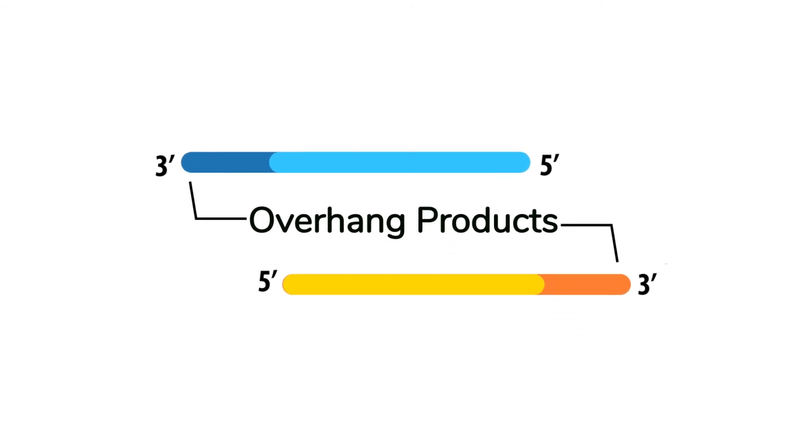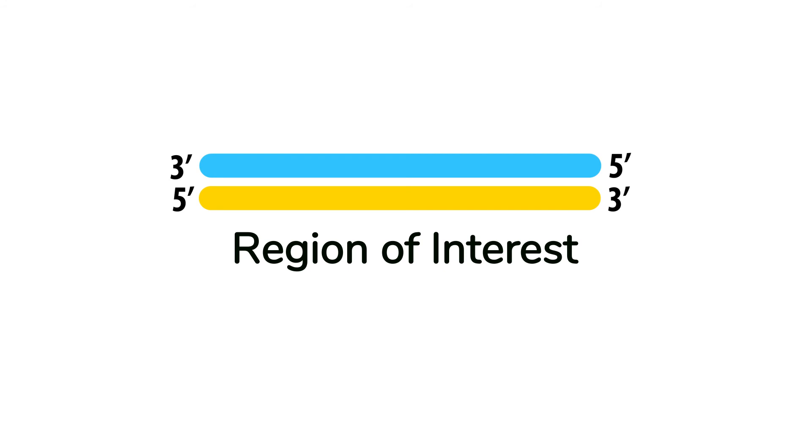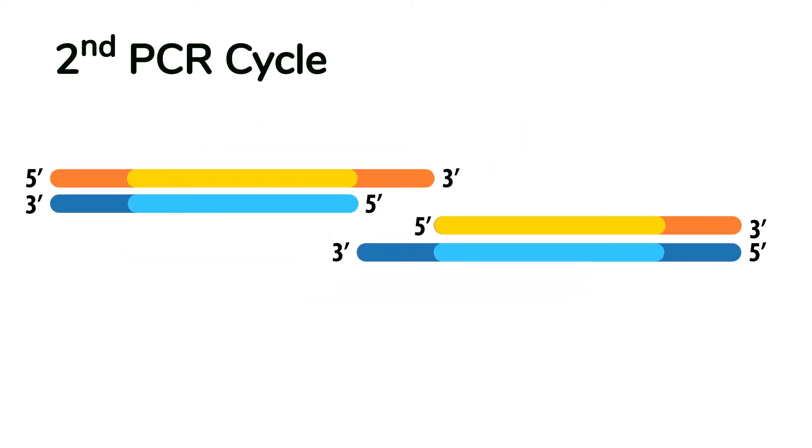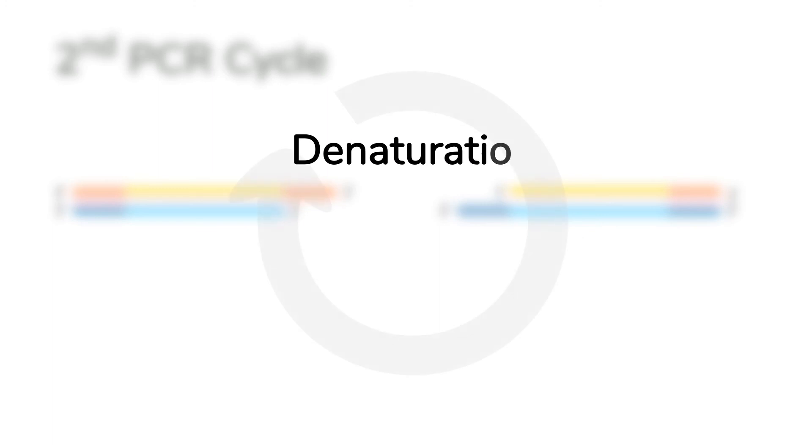To successfully amplify the region of interest without these overhang products, we need to repeat the PCR cycle at least twice. For the second cycle, we have to go through denaturation, annealing, and elongation again.